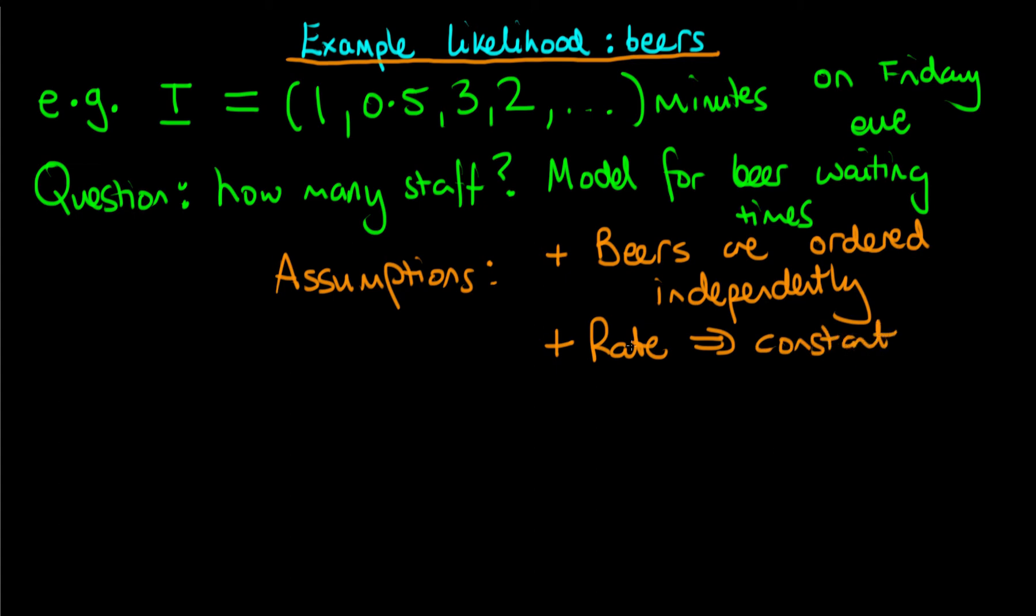Then what we need to do to choose a suitable probability model which encompasses both of these assumptions is we might look this up in some book or on the internet, and we would find that the exponential distribution is the continuous distribution that satisfies both of these properties that I've mentioned previously.